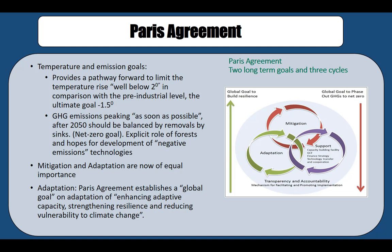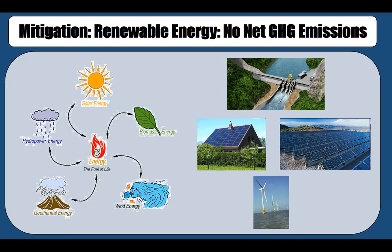Under the Paris Agreement, mitigation and adaptation are now of equal importance. Some key mitigation approaches involve shifting to renewable energy sources with no net greenhouse gas emissions. Renewable energy sources include solar, biomass, wind, geothermal, and hydropower energy. In all these cases, carbon dioxide or other greenhouse gas emissions are zero, close to zero, or net zero.